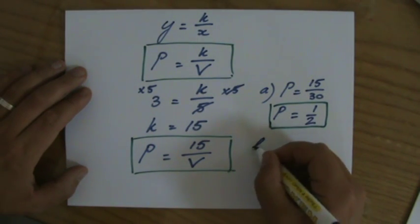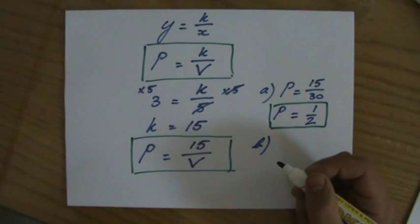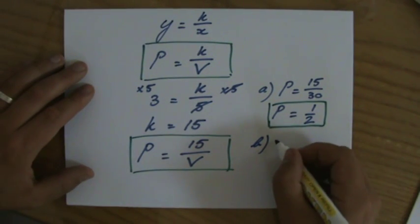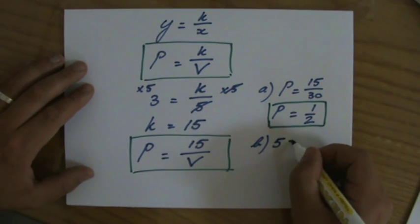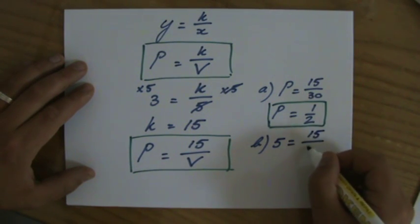And then the second question is what is the volume if the pressure is 5. So the pressure is 5 equals 15 over the volume.